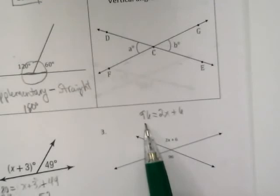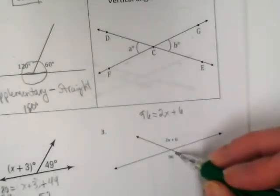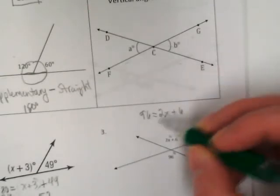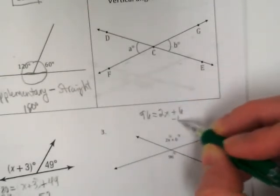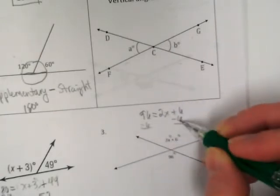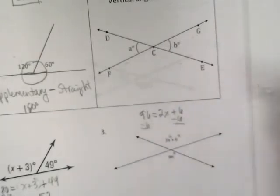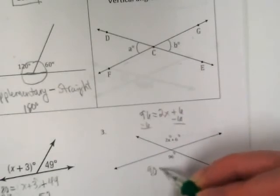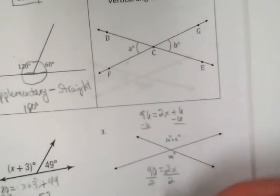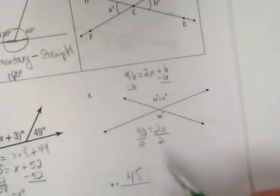So whatever this number is, is my answer, because that's my whole angle degrees. These should have degree marks on them. And I'm going to just solve the equation. This 6 minus 6 is 0. 96 minus 6 is 90 equals 2x. I divide by 2. I end up with 90 divided by 2 is 45 degrees.